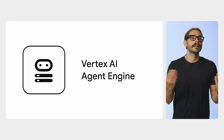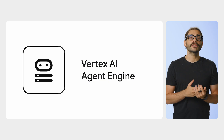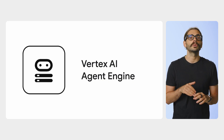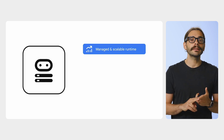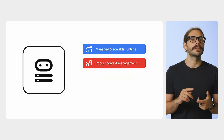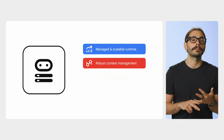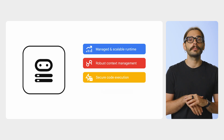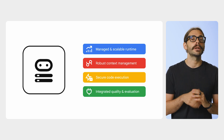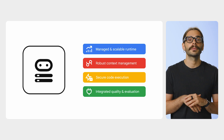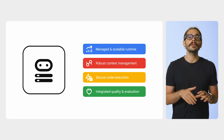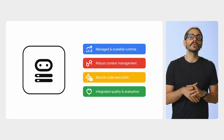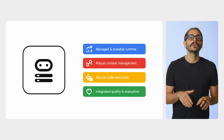Let's recap. Vertex AI Agent Engine closes the production gap with a scalable, secure environment to run your agents at scale. It provides a managed runtime, robust context management with Sessions, Memory Bank, and Example Store, a secure code sandbox, and integrated evaluation to ensure quality. It supports the open-source frameworks you already know and use, and gives you tools like the Agent Starter Pack to get you running in minutes rather than months.